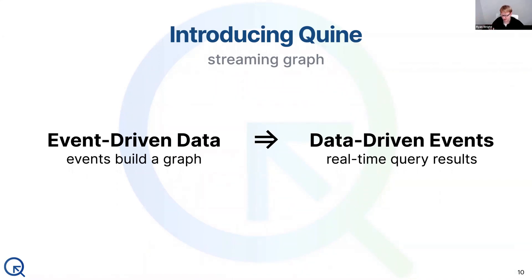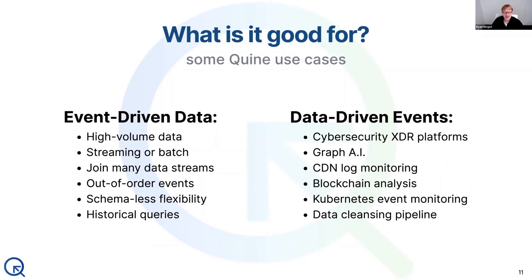Queries on that graph find complex patterns and immediately stream out their results. With those results, you can feed additional systems like cybersecurity XDR platforms, graph AI systems, or existing systems with the benefit of having prepared that data through the graph. A number of users are using it for CI/CD and log monitoring analysis, blockchain analysis, monitoring Kubernetes infrastructure, or taking the data cleansing that has to be done ahead of real data processing and feeding clean data in — automating the cleansing using the streaming graph system itself.